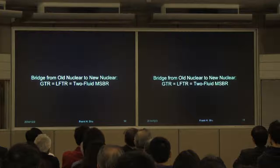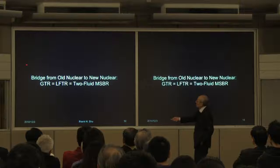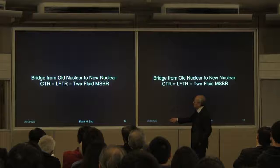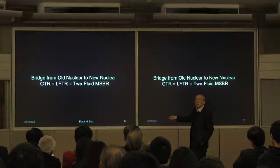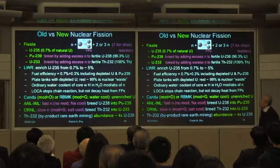I want to spend a little time talking about going from what I call old nuclear to new nuclear. There are a lot of acronyms here. This is the graphite thorium reactor — in popular social media it's called the liquid fluoride thorium reactor, and at Oak Ridge it was called the two-fluid molten salt breeder reactor. It's all the same thing; the differences are only in small details.